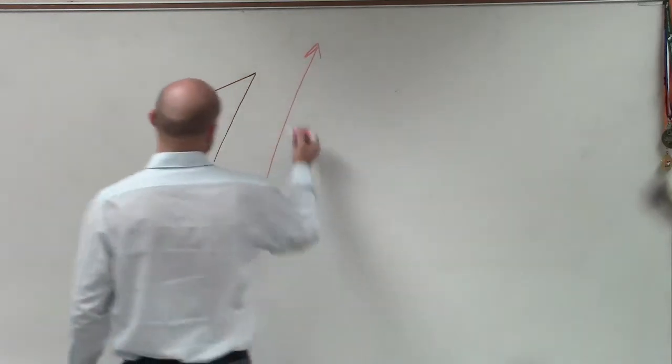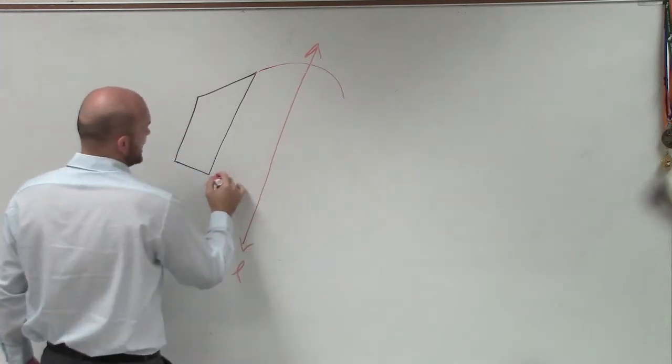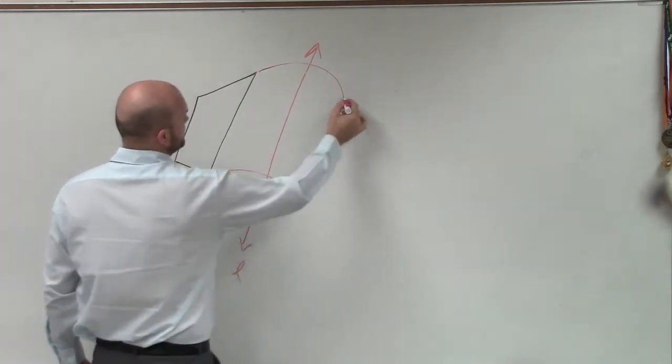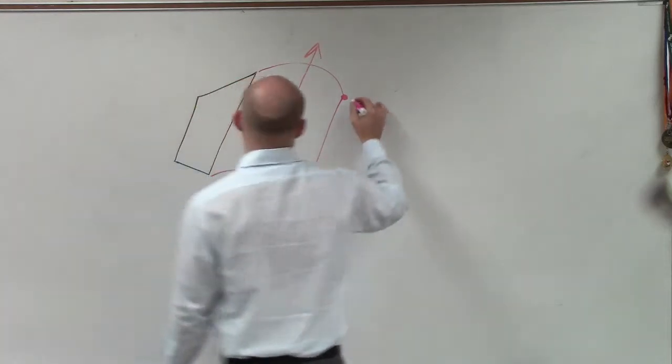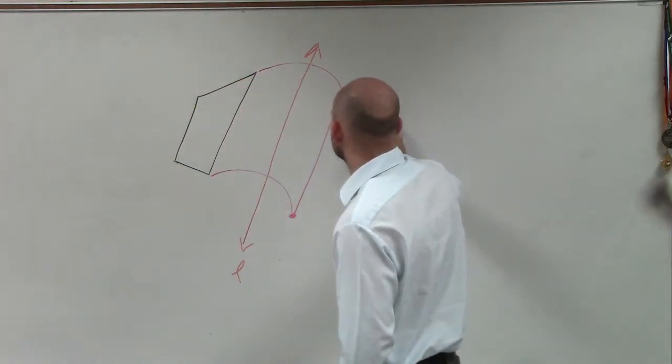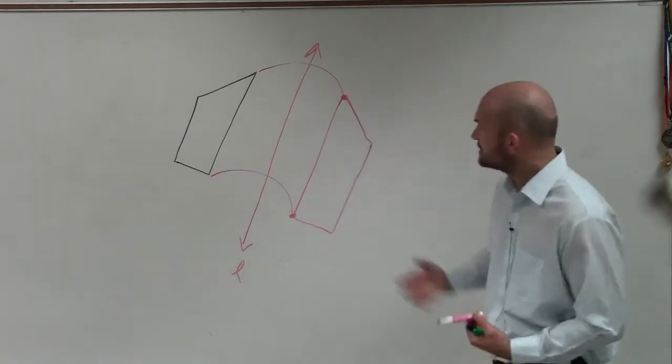So all we're going to do then is simply carry each one of these points to the other side of the line. And what we want to do is make it be an exact replica of what it looks like on the other side.